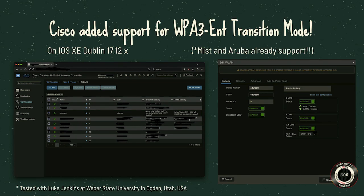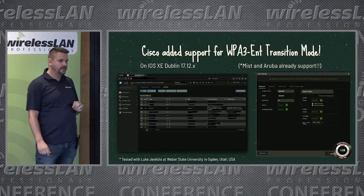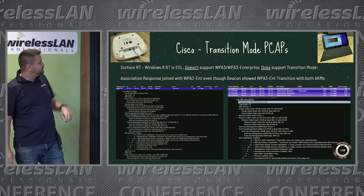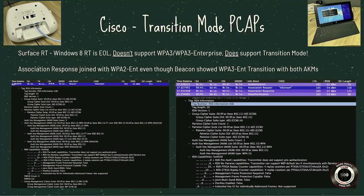Not all clients support transition mode, but it is a possibility if you care about that 0.6% of clients. Here are some PCAPs showing the association response joining with WPA2, even though the beacon advertised a WPA3 Enterprise transition mode AKM. The client I found for testing is an old Surface RT — end of life, no updates, it will never get WPA3 support. It's kind of a dead product but good for testing. These clients do exist, but they're getting rare and will continue to get more rare in homes and businesses.